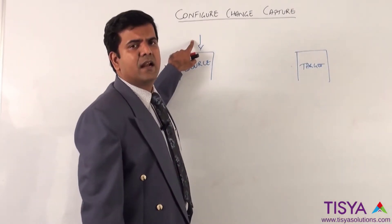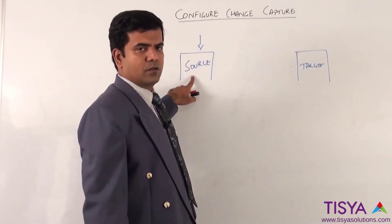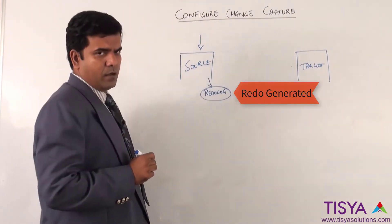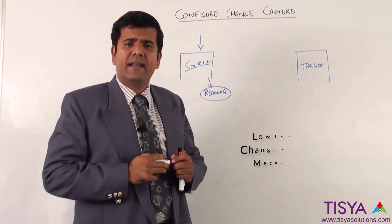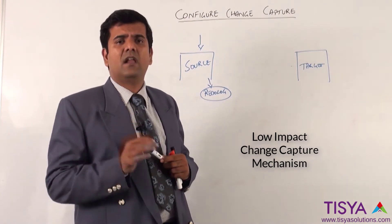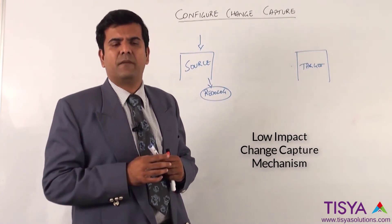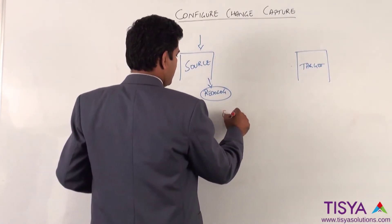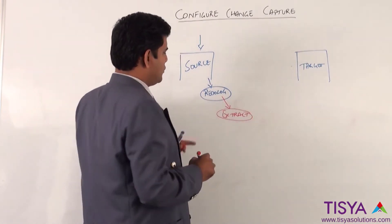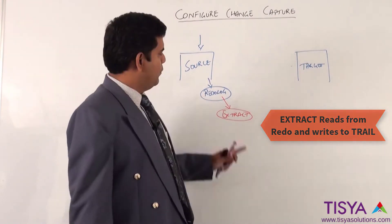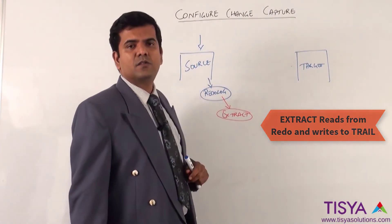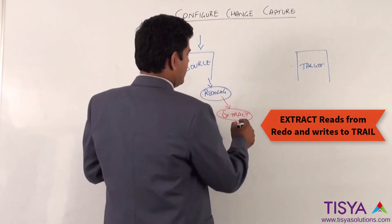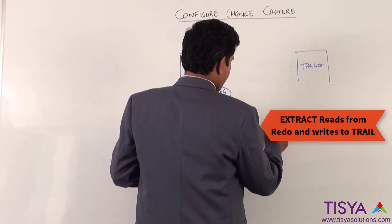As transactions are being done by applications into the source, it will also write to the redo log. GoldenGate is a low-impact change capture mechanism wherein the extract you configure is going to read from the redo log, which is not going to impact the source system's performance. Having read from the redo log, it is going to create a trail file.